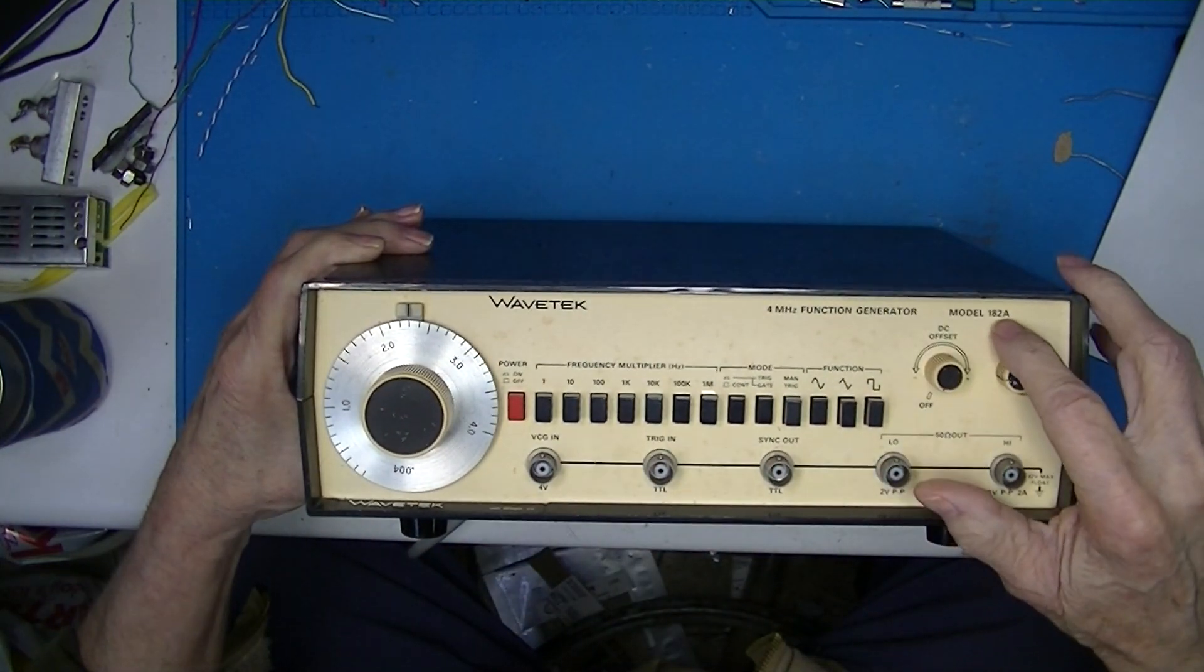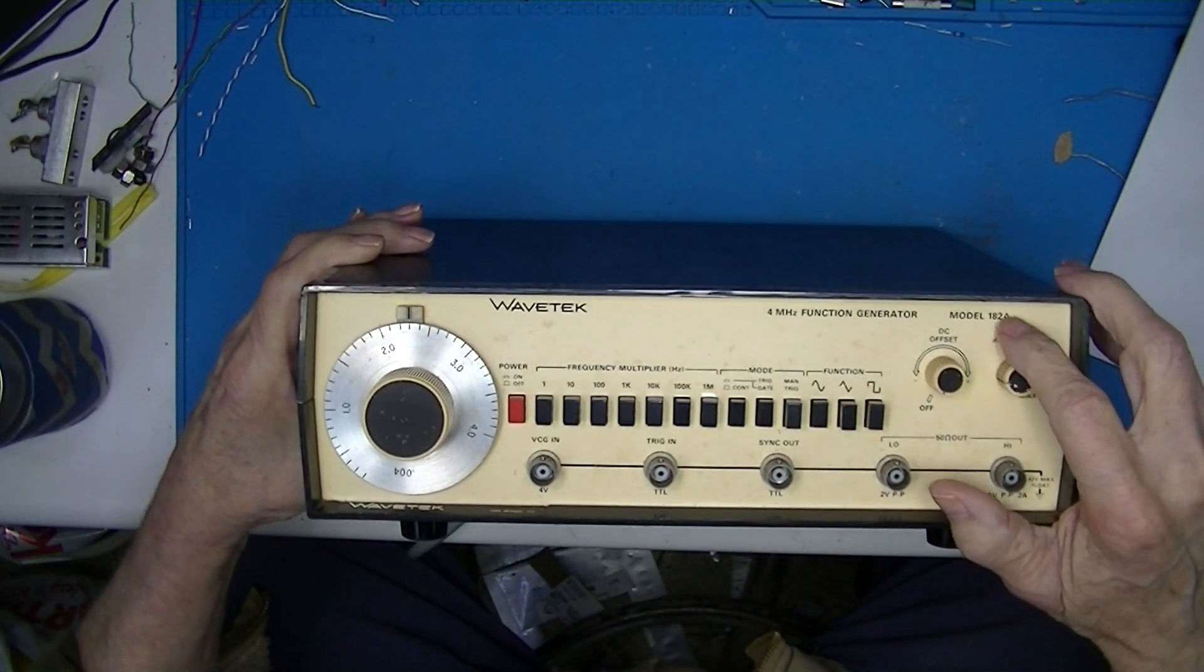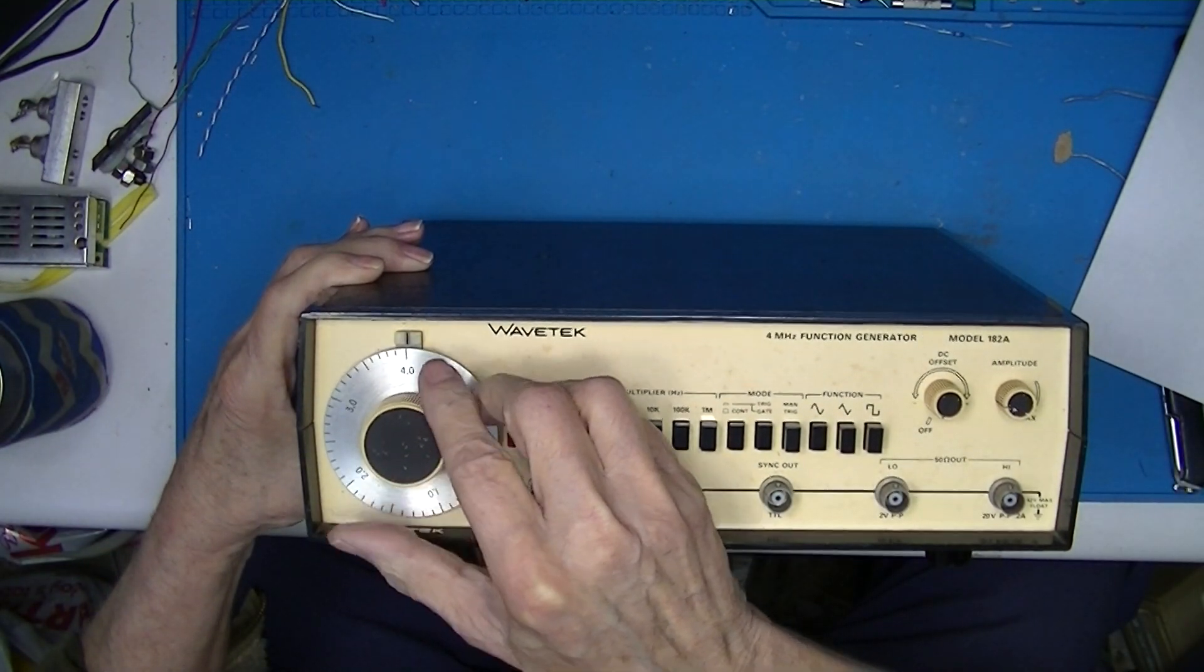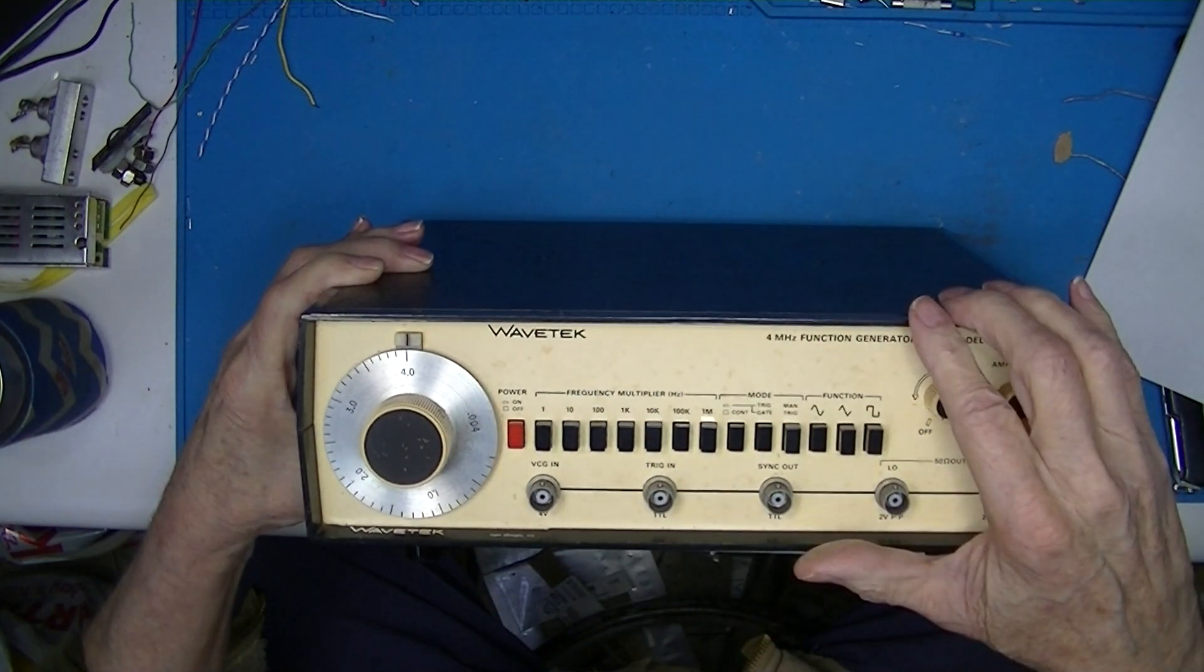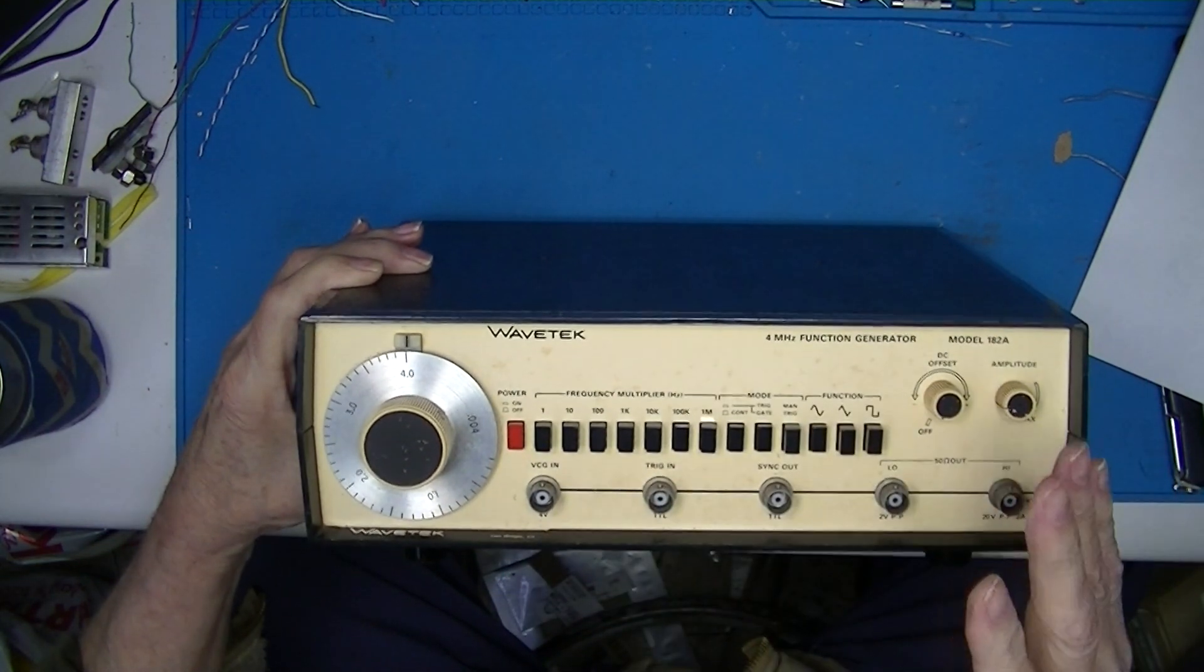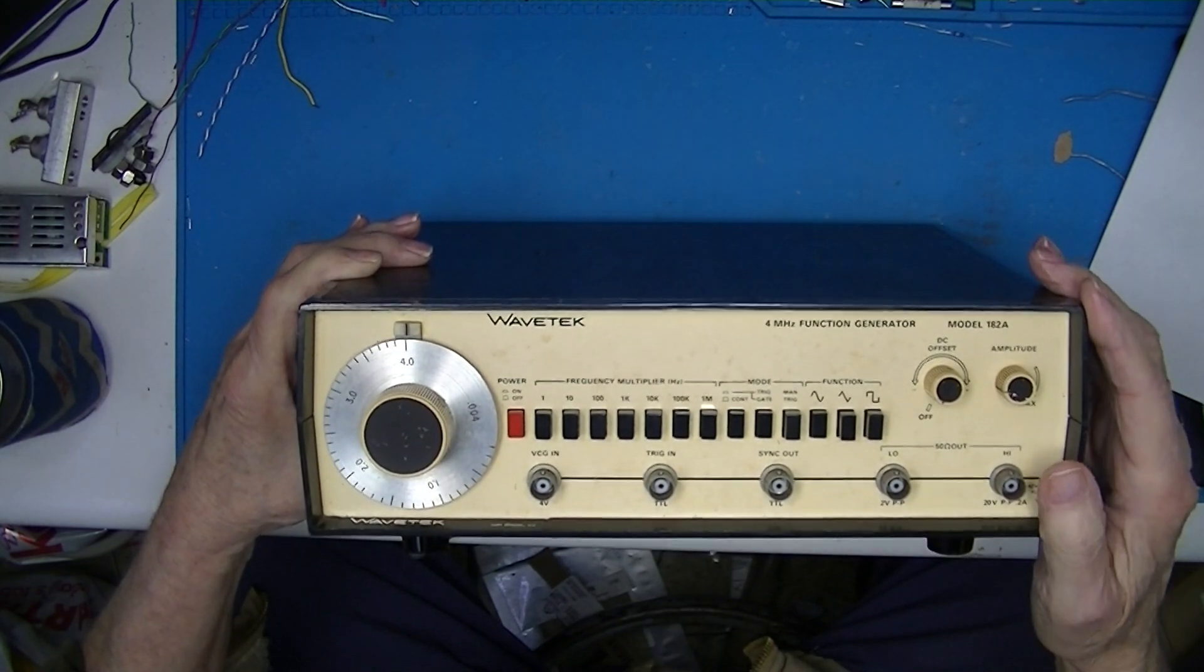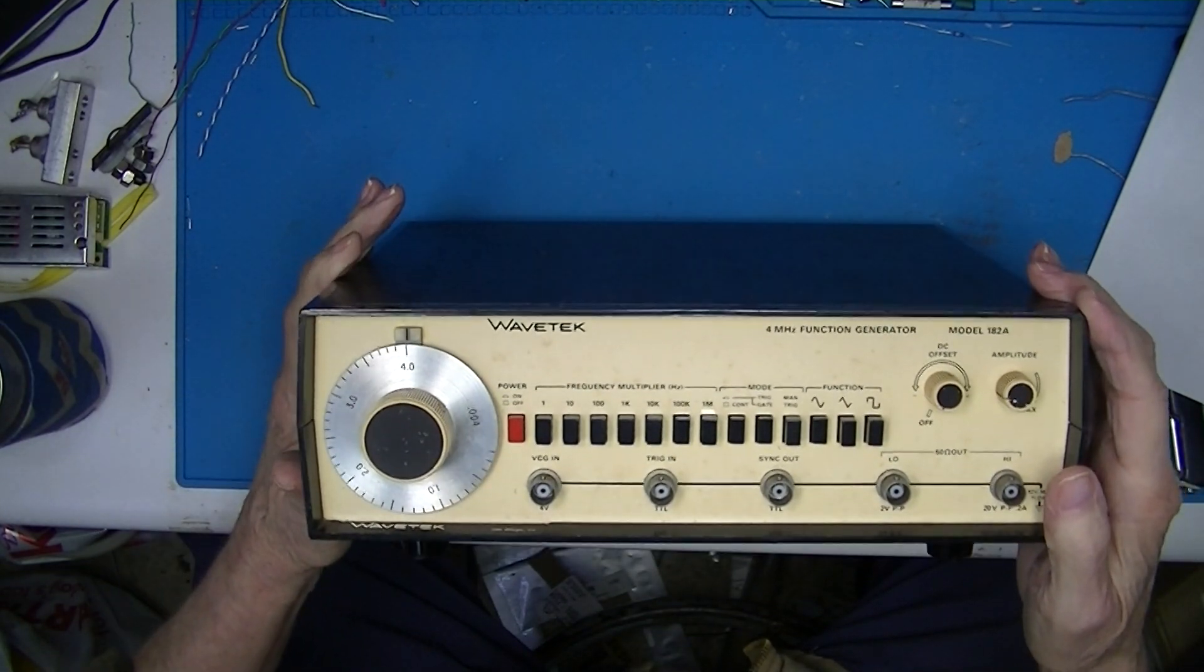Now the only difference between the 182 and the 182A is that the 182 goes to 2 MHz while this goes to 4 MHz. I think otherwise they're physically and functionally identical. But we'll take a look.